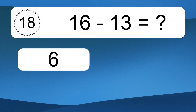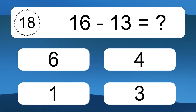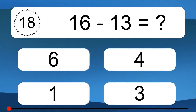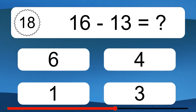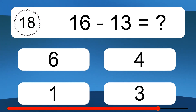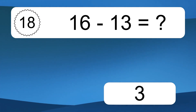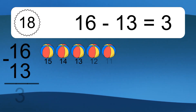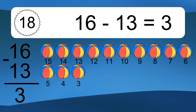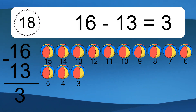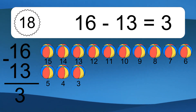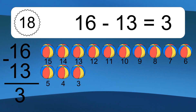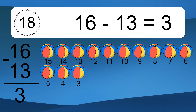16 minus 13 equals what? 16 minus 13 equals 3. Let's count it: 15, 14, 13, 12, 11, 10, 9, 8, 7, 6, 5, 4, 3.